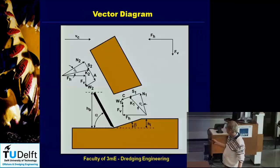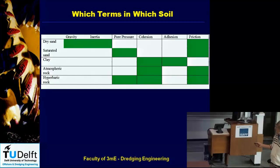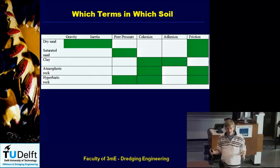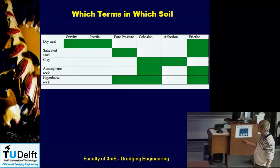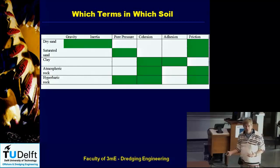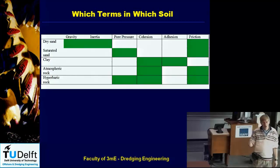Here is a table showing which forces apply to each material type. Dry sand only has gravity and inertia. Saturated sand — meaning 100% water-saturated with no air — has pore pressures; gravity and inertia are so small they are neglected. There is no cohesion or adhesion in sand, but there is friction — both internal and external. Clay has gravity and inertia but they are negligible; there are pore pressures in clay but they are not relevant to the cutting process, so we don't take them into account.